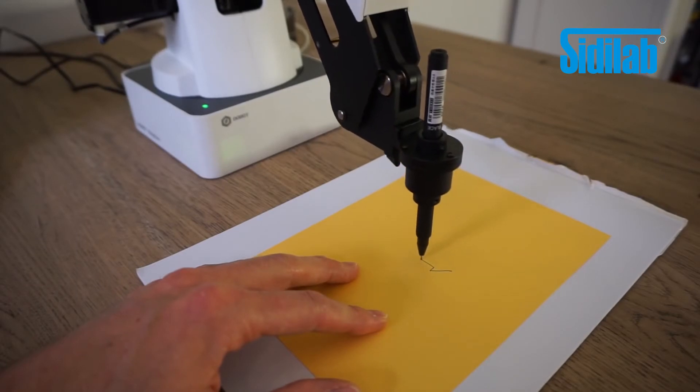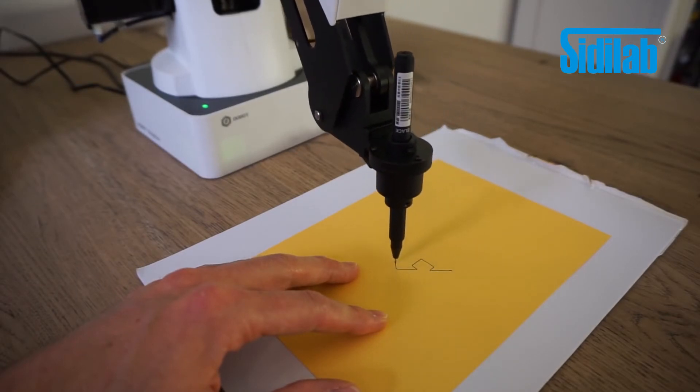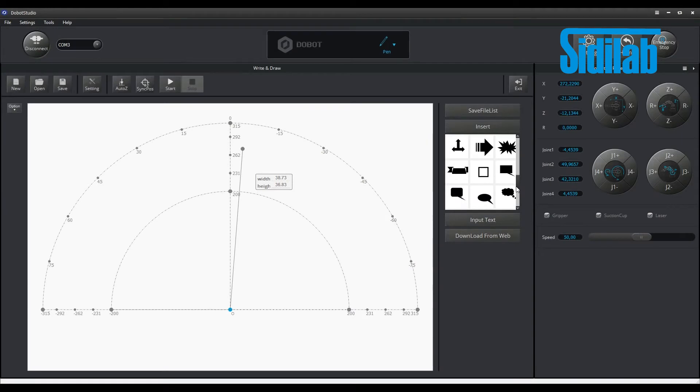Also I tried to make a couple of drawings using the write and draw menu. Using the insert button I selected a couple of basic figures. When the figures are in the correct place you can press the sync post button. This will move the pen to the start position of the figure. This will also allow you to align the paper and set the pen down position.